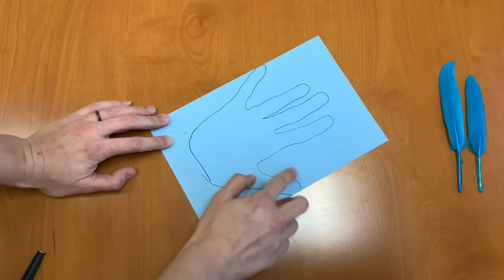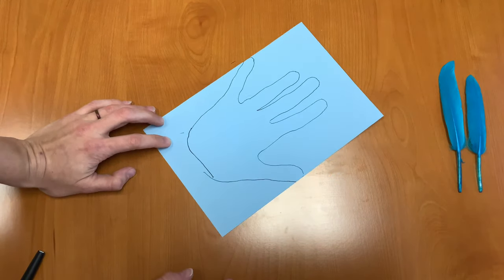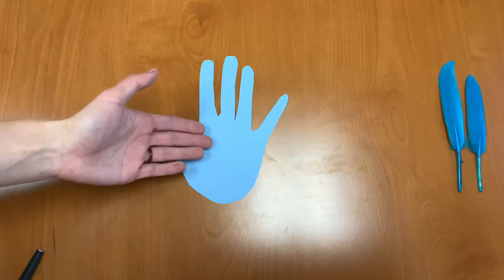Next step, we're going to cut out this handprint. So I'm going to cut my handprint out and I'll see you in just a second. Alright, now I've got my handprint cut out.